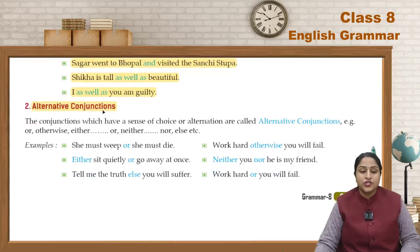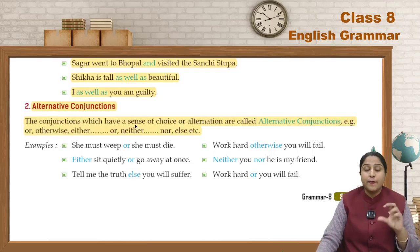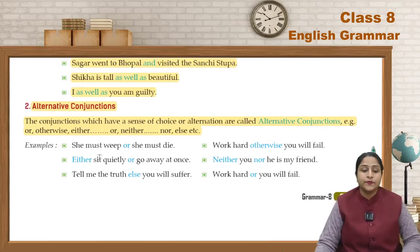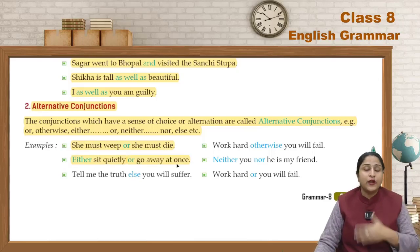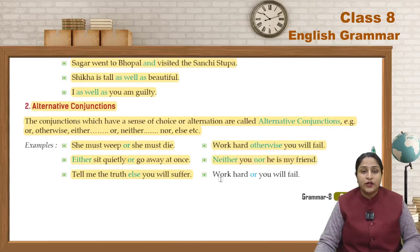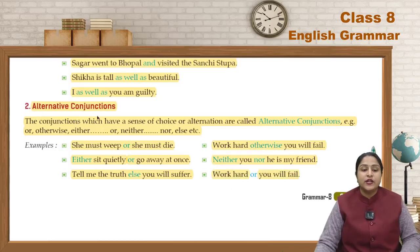Subordinating Conjunctions can be used in the beginning as well as in the middle of the sentence. There are conjunctions that have a sense of choice — where we have an alternative, either this or that — these are called Alternative Conjunctions. Examples: otherwise, either...or, neither...nor. For example: 'She must weep or she must die.' 'Either sit quietly or go away at once.' 'Tell me the truth else you will suffer.' 'Work hard otherwise you will fail.' 'Neither you nor he is my friend.' 'Work hard or you will fail.' These are Alternative Conjunctions.